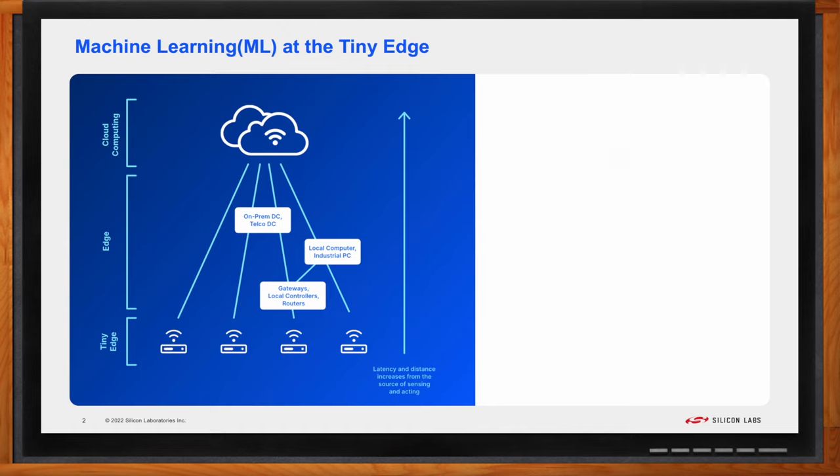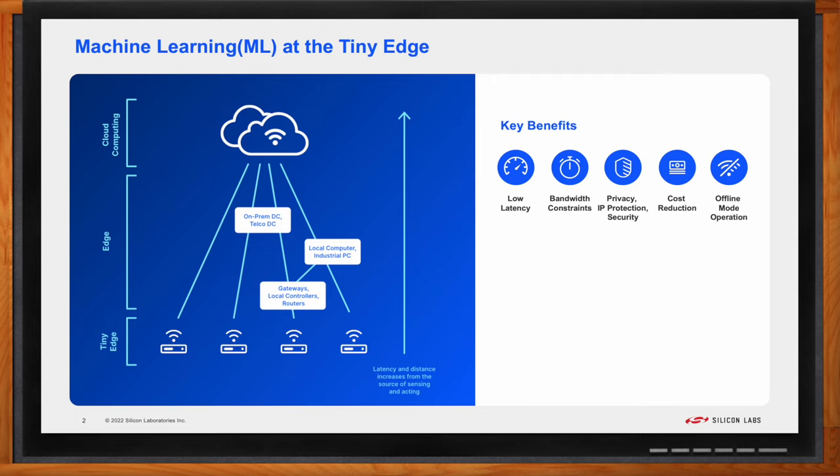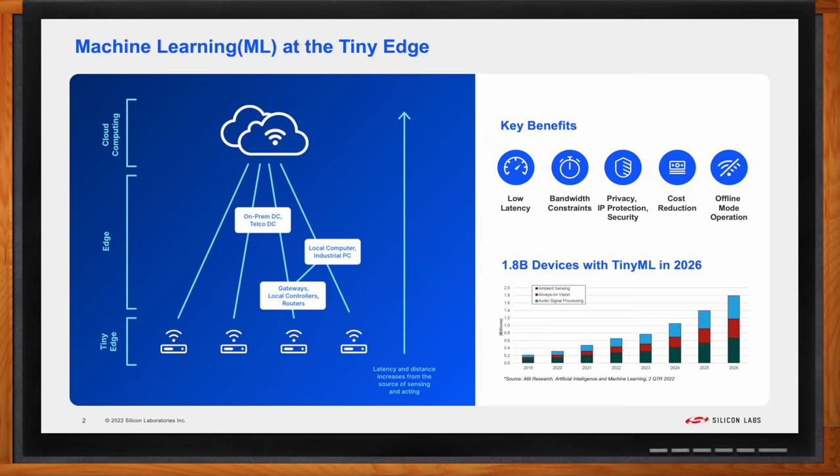Once you're processing at the source, the benefits multiply. Reducing latency, conserving bandwidth, improving privacy, and even reducing costs are just some of the advantages. Plus, you deliver a smarter application. With these advantages, it's no wonder the projections for devices running machine learning at the tiny edge are growing from a half billion to two billion devices in just the next four years.